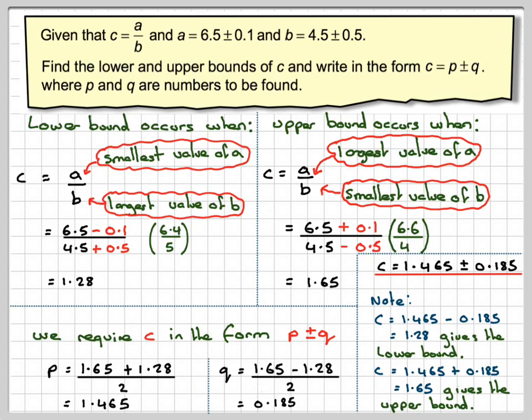So we can see how writing in this form actually does work. This has been a video to show you how to find the lower and upper bounds of c, which is a division of two numbers measured to a certain degree of accuracy. I hope you've understood, and thank you very much for watching.